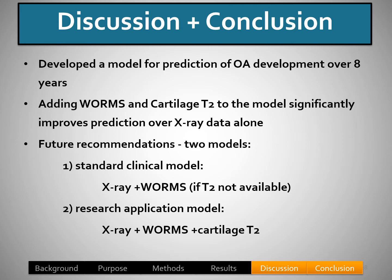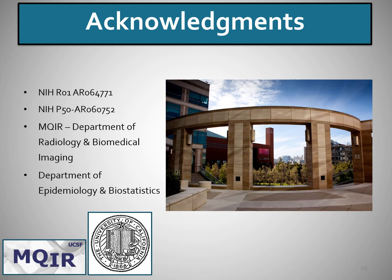For the discussion, we developed a risk prediction model over eight years, and adding WORMs and cartilage T2 significantly improved prediction over x-ray alone. For future recommendations, we may recommend two models: a standard clinical model with x-ray and WORMs if T2 is not available, and if T2 is available, a research application model with T2 would be useful. I'd like to acknowledge our research group and NIH with our funding sources. Thank you so much.